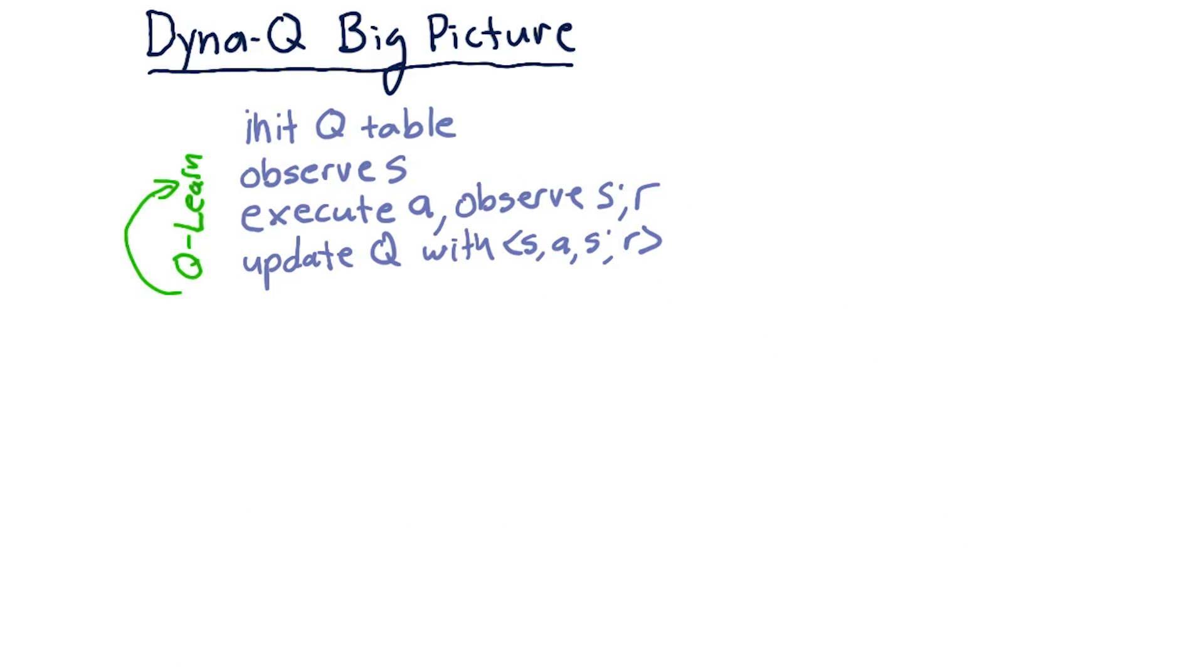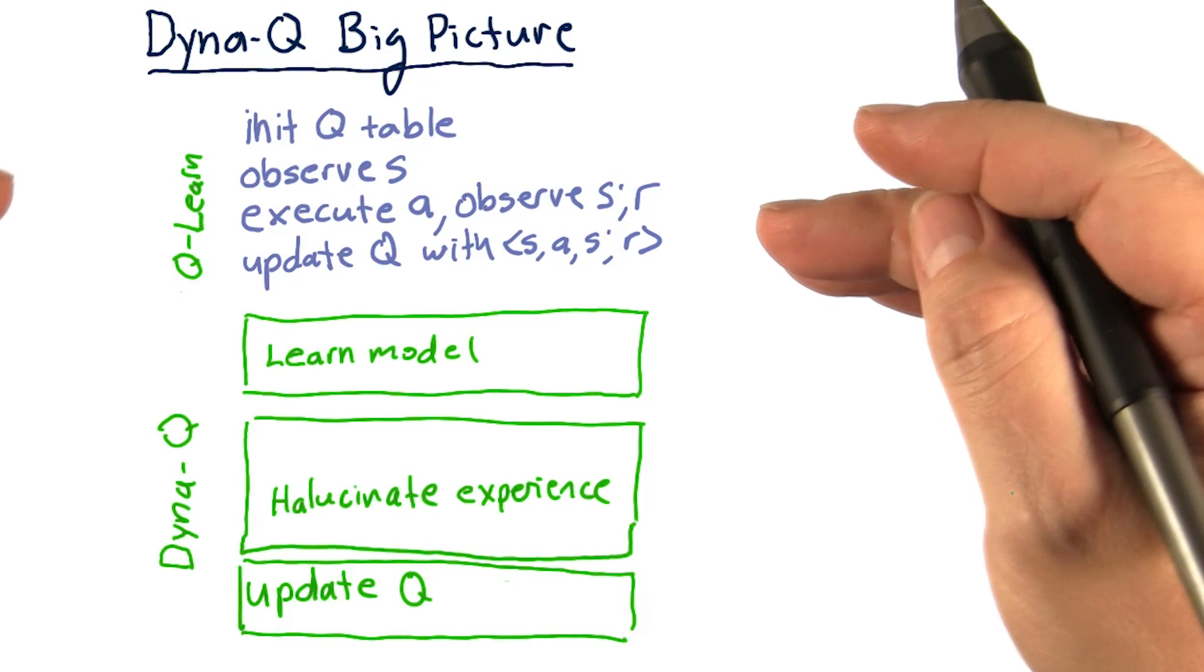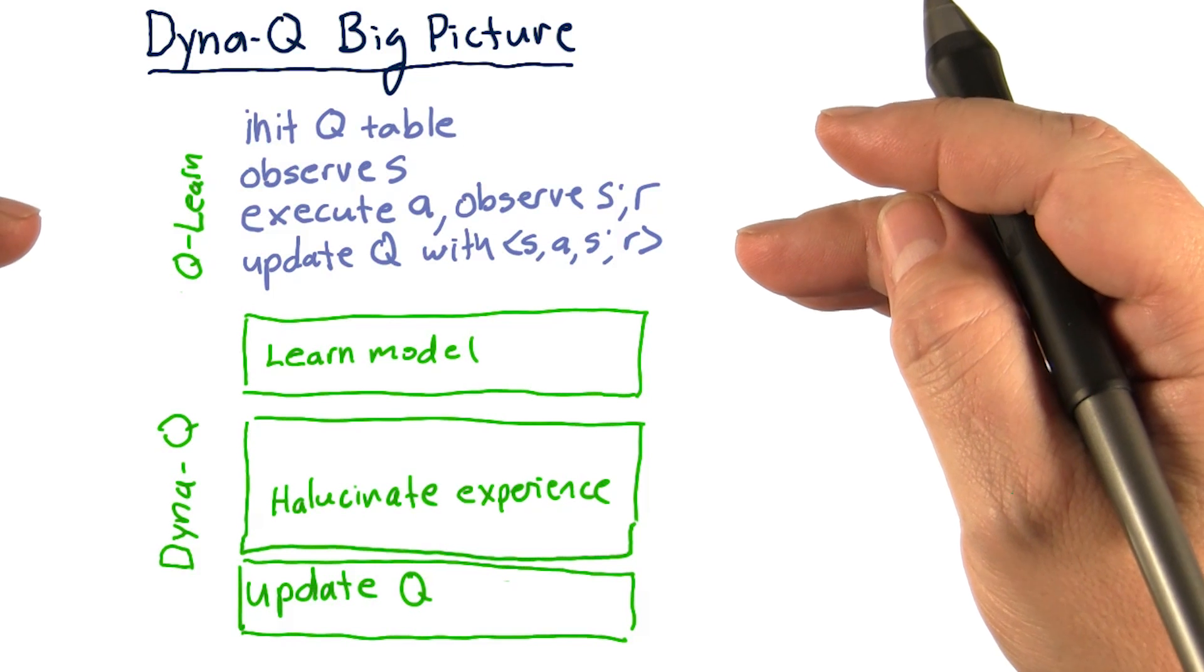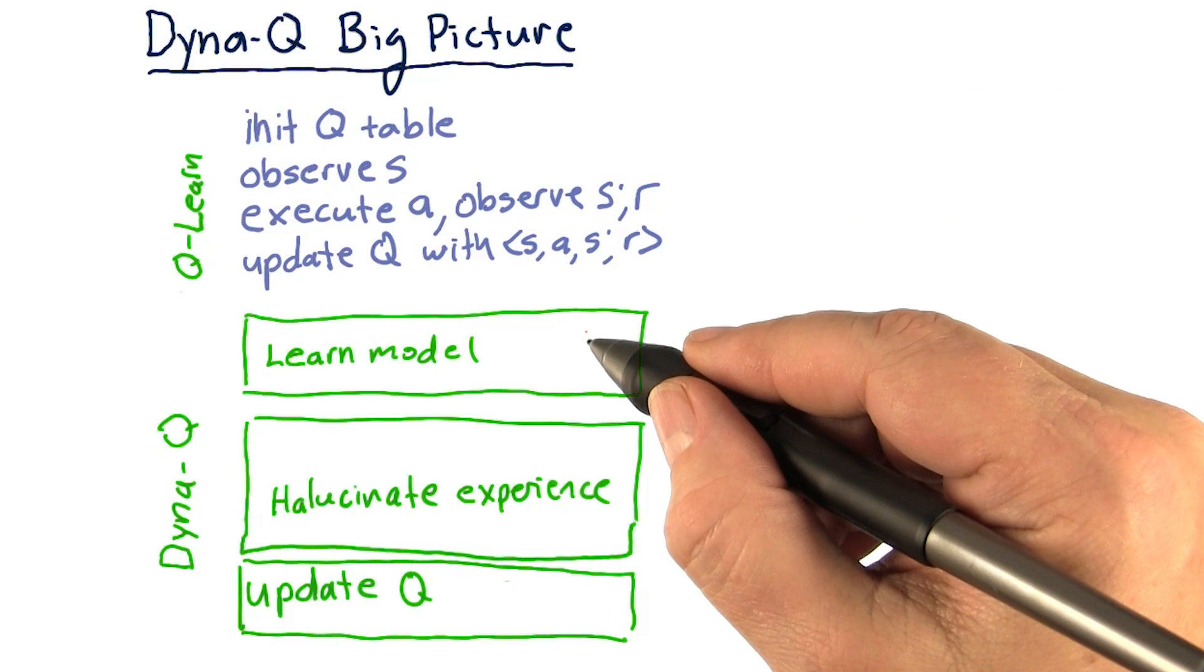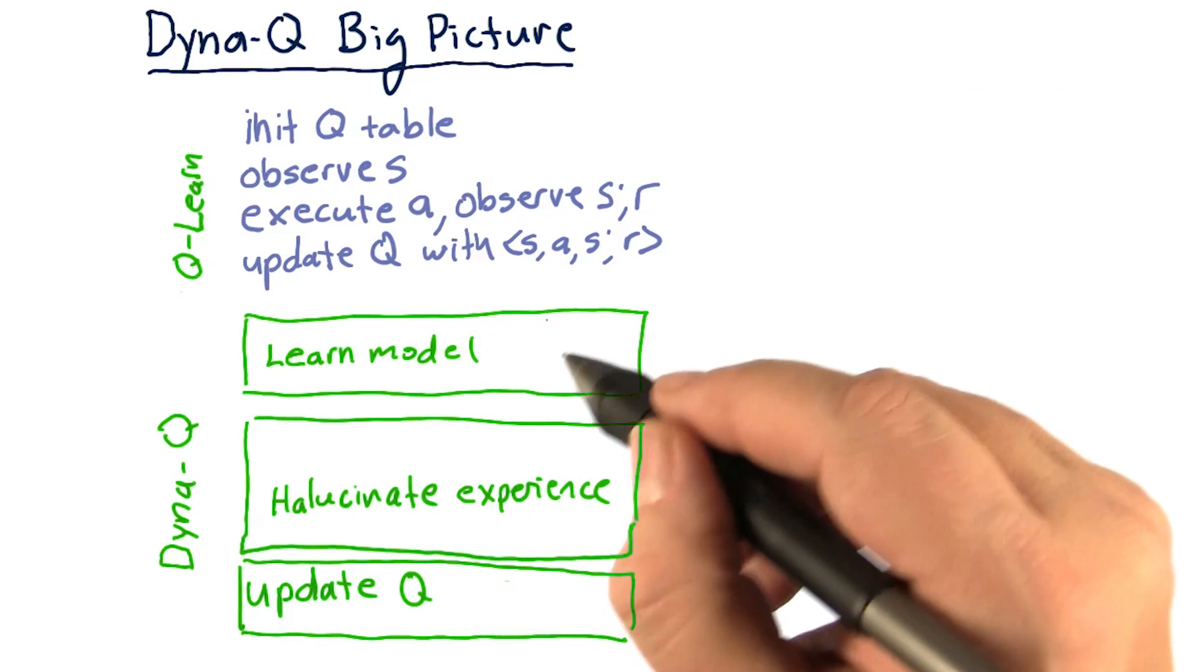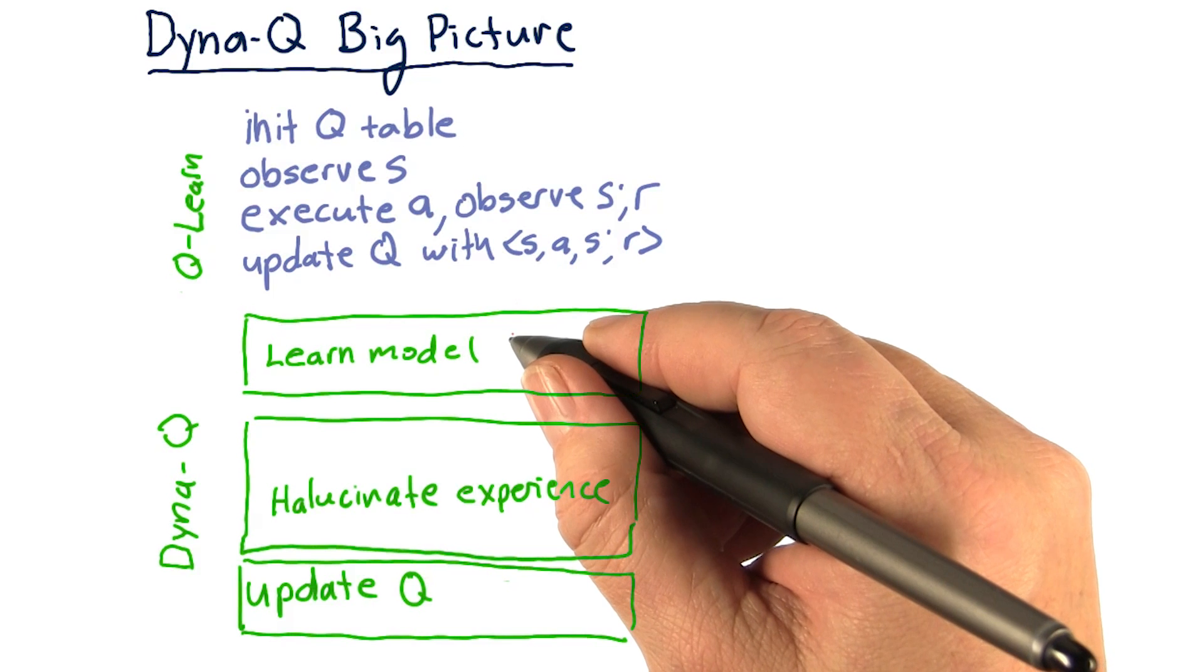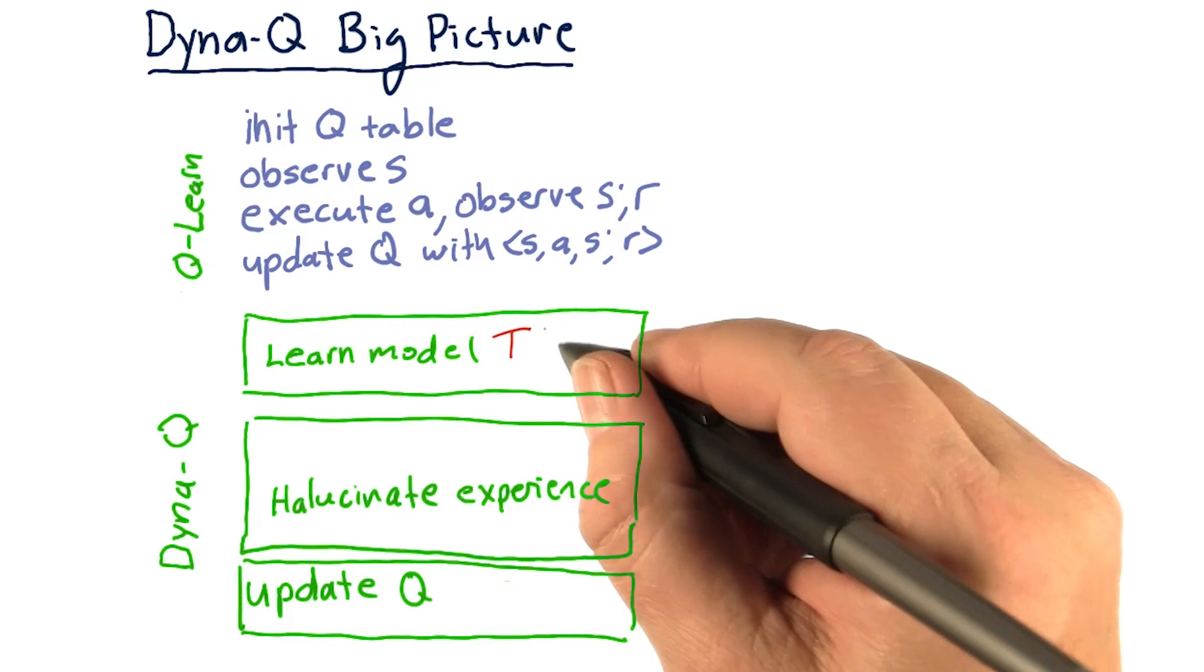And our Q-table becomes better and better. So when we augment Q-learning with DynaQ, we add three new components. The first is that we add some logic that enables us to learn models of T and R.